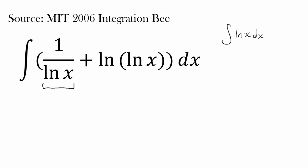Maybe we can let natural log of x be u — try using substitution. We let u equal natural log of x because I see two natural log of x residing within this integral. Maybe that's going to help us out, so let's try that.